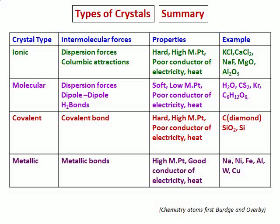The last type is metallic crystals. They are also pretty strong and are good conductors of electricity and heat. They form between metals and conduct electricity in solid state. This is the key difference between a metallic crystal and an ionic crystal: ionic crystals can conduct electricity only in solution, whereas metallic crystals can conduct electricity in solid state because of the sea of electrons around them. All metals are examples.